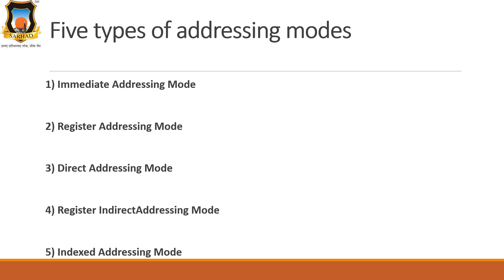There are five different ways to execute the instructions of the 8051 microcontroller. They are: immediate addressing mode, register addressing mode, direct addressing mode, register indirect addressing mode, and index addressing mode. Let's see all these addressing modes one by one.